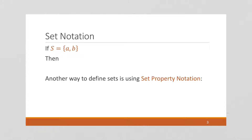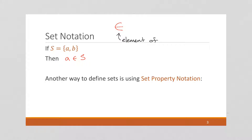So let's talk about set notation. We've already seen the standard notation for writing a set. If the set S contains elements A and B, then A is an element of S. This symbol — it's sort of like an E — means 'element of.' So A is an element of S, and B is an element of S, but C is not an element of S.